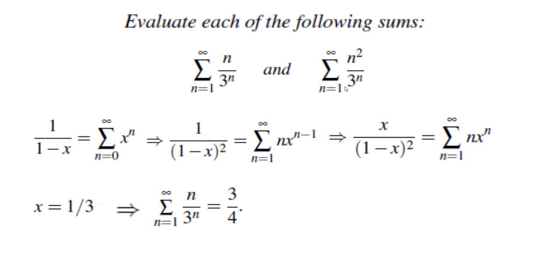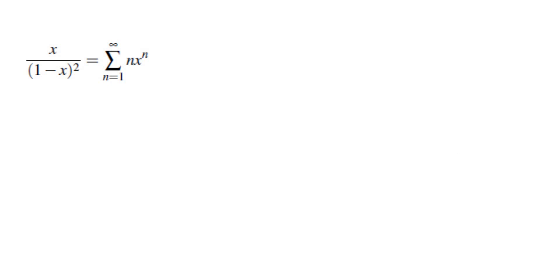Now we're going to move on to the second sum. In order to get to the second sum, we need another factor of n. So what we can do is take the sum of n x to the power of n and differentiate again. If you aren't familiar with differentiation and would like to see a pre-calculus solution, we'll talk about that at the end of the video. So we're going to differentiate both sides. Let's rewrite: the sum of n x to the power of n equals x over (1 minus x) squared.